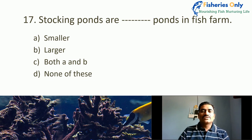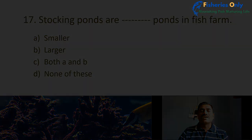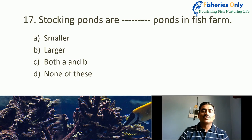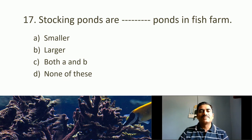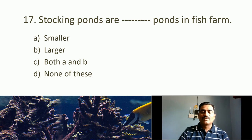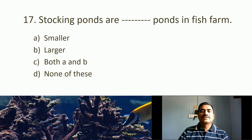Seventeenth MCQ: Stocking ponds are what size in fish farms? Options: smaller, larger, both A and B. Stocking of fishes in a farming system is the last stage, and from stocking ponds we harvest our fishes. The pond size is also larger. The correct answer is larger.